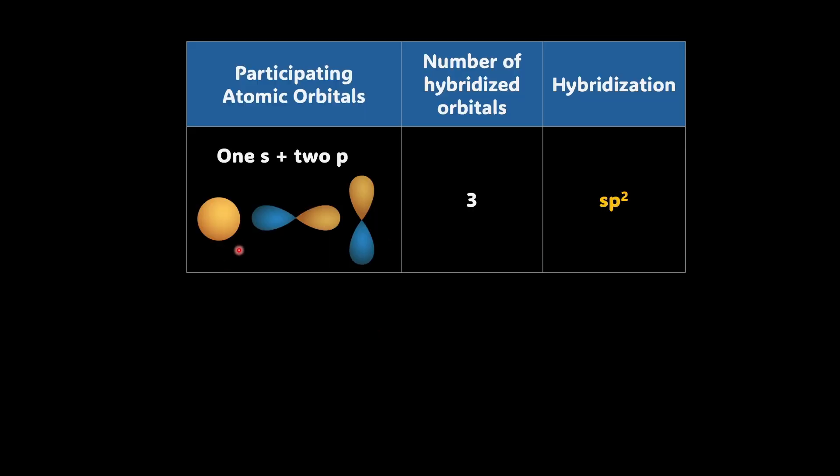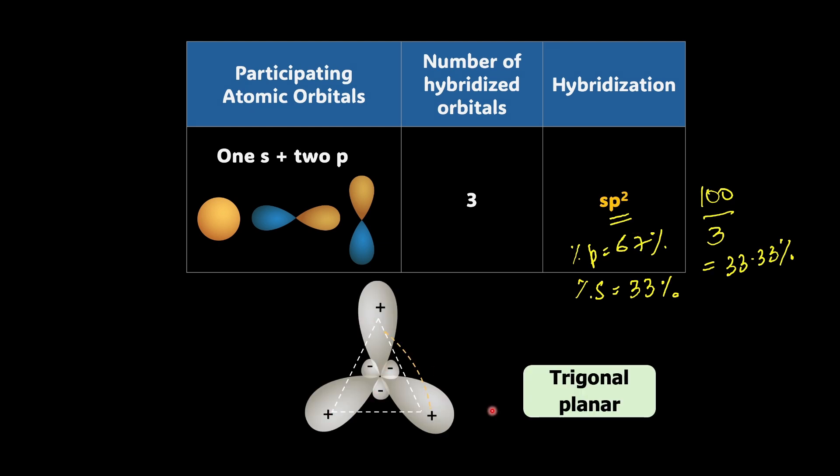Here is how it works. One s orbital and two p orbitals, say px and py, mix together to form three sp2 hybrid orbitals. Each of these new orbitals has 67% p character and 33% s character. Where is it coming from? What you can do is just divide 100 by 3. So you get 33.33%. Because there are two p's, so almost 66.66%, that means 67% is the percentage p character and percentage s character is 33.33%, which I am approximating to 33%.